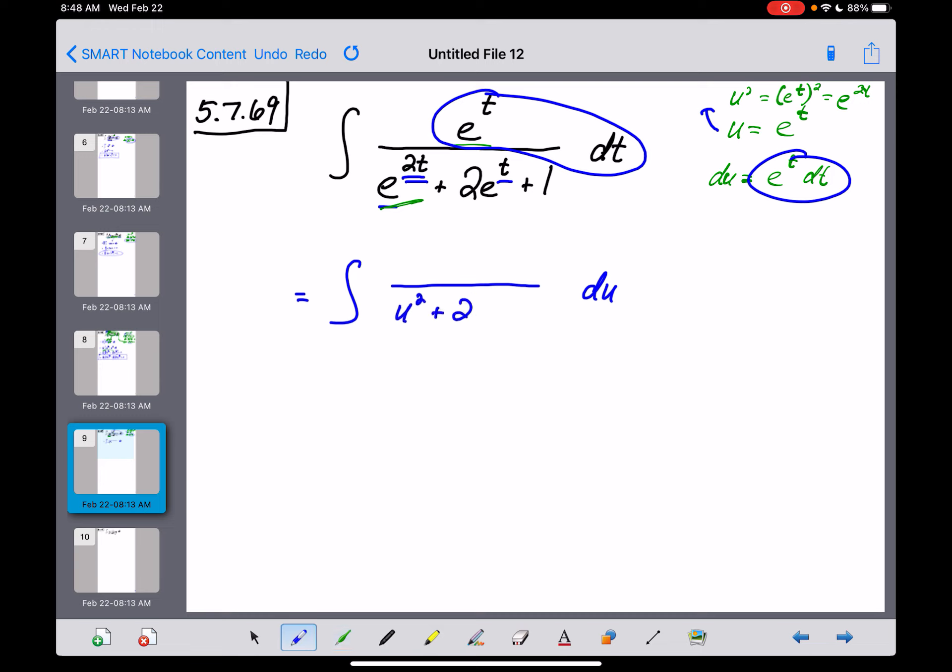And then plus 2, e to the t, is just what u is. That's a 2u and then a plus 1. Now, again, that whole numerator, e to the t, and then multiplied by dt just became du, there's just a 1 up there in that numerator right there. Okay? And that's interesting.